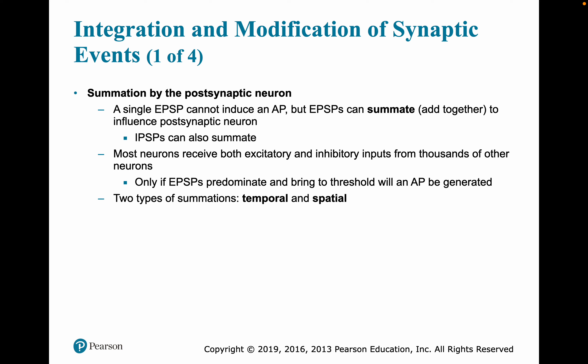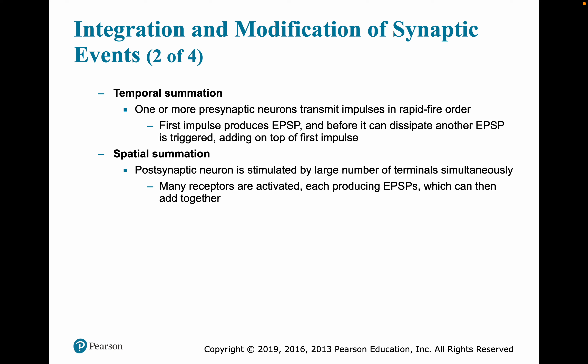This is where we begin to get a feeling for how integration occurs. We can summate the excitatory and inhibitory signals that are coming in, either temporally or spatially, and by doing that we can predict whether a postsynaptic neuron is going to send a signal down its axon. In temporal summation, one or more presynaptic neurons transmit impulses in rapid-fire order. In spatial summation, a large number of terminals simultaneously fire; they can be excitatory or inhibitory.